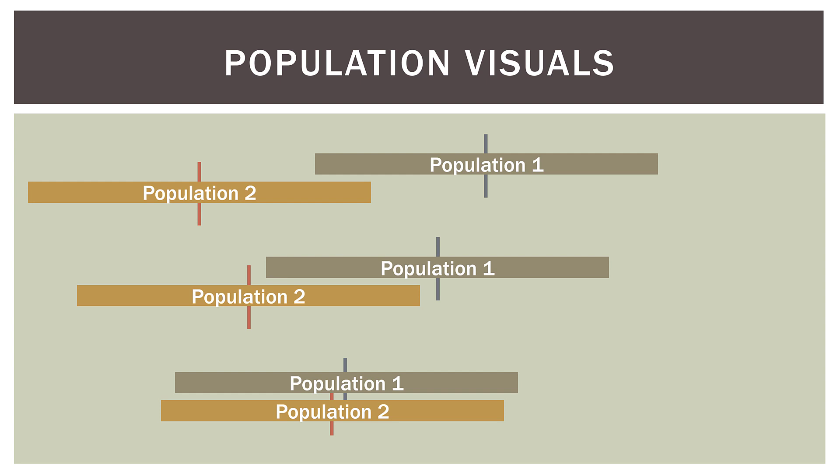In the third example, the populations are pretty much completely overlapping, and the location of the medians for both populations are very, very close. So we can see three examples: starting with populations very far apart with quite a bit of distance between medians, all the way to populations that overlap with very close medians. In terms of our hypothesis: at the top we would most likely reject our null hypothesis; at the bottom we would probably fail to reject it, because the populations basically overlap.